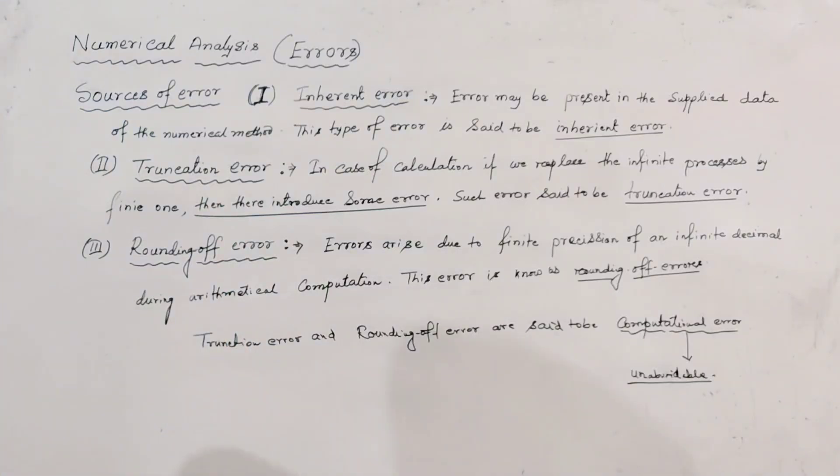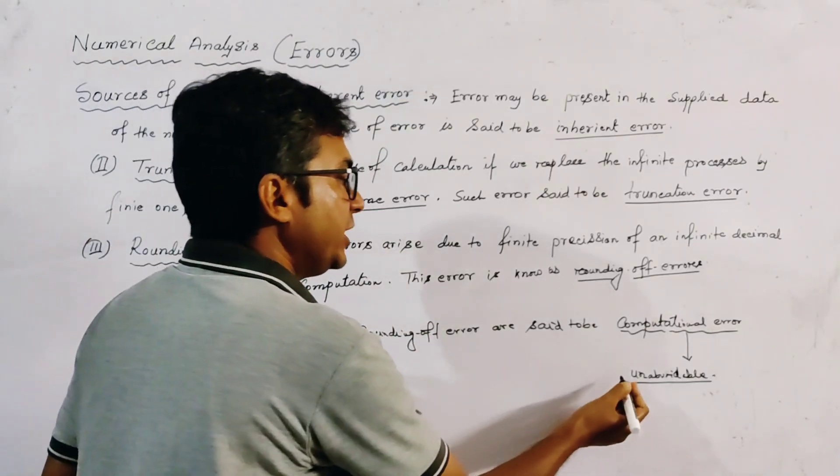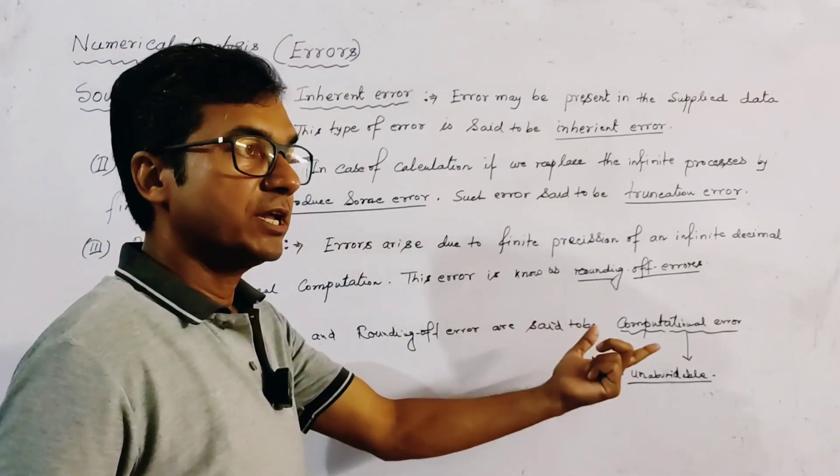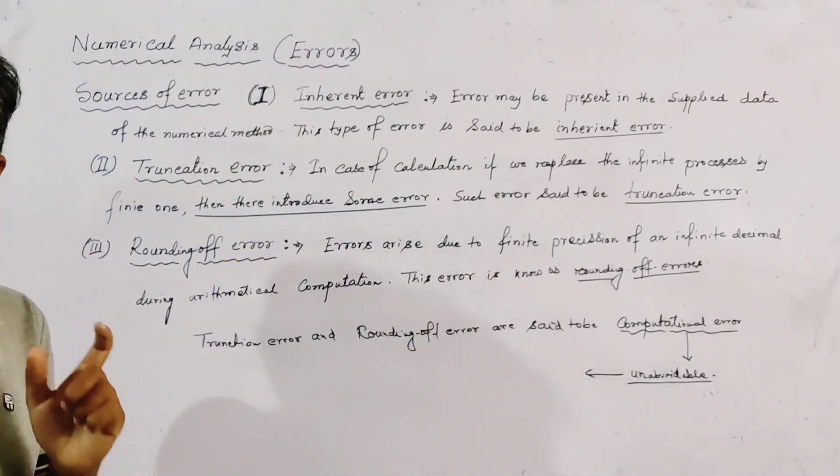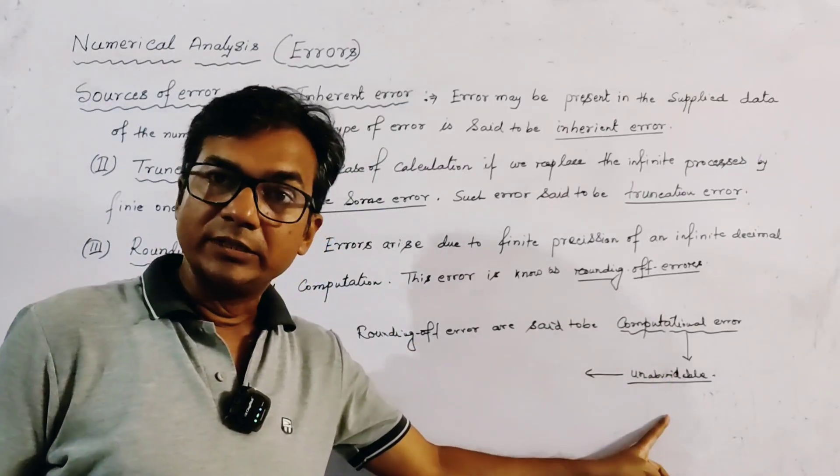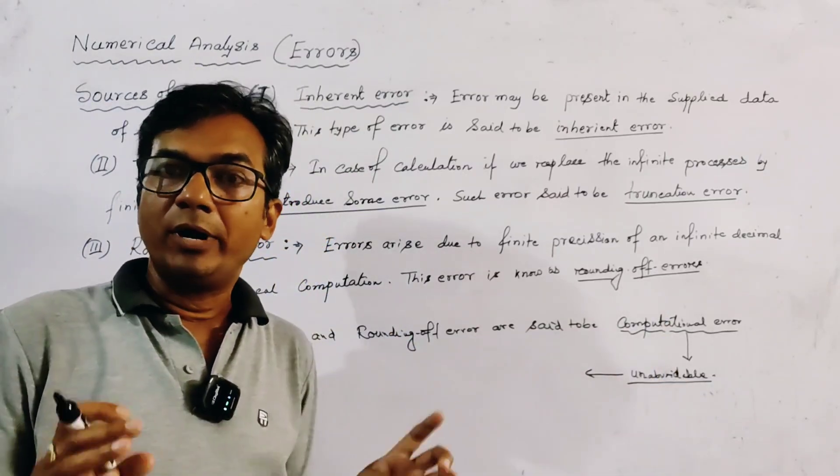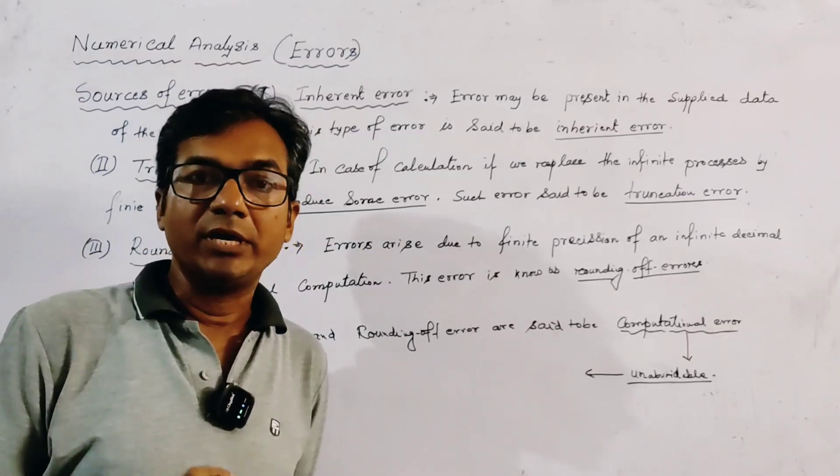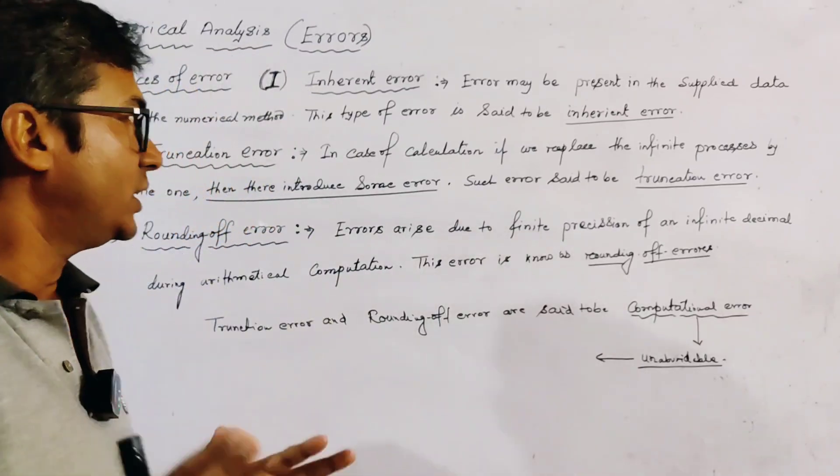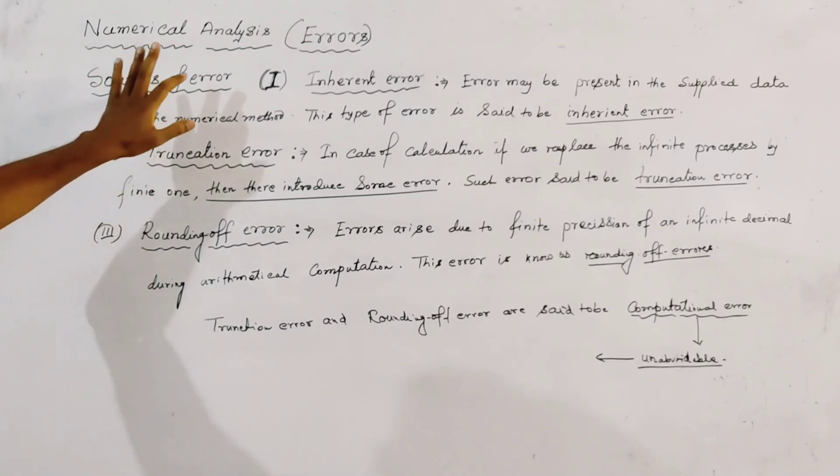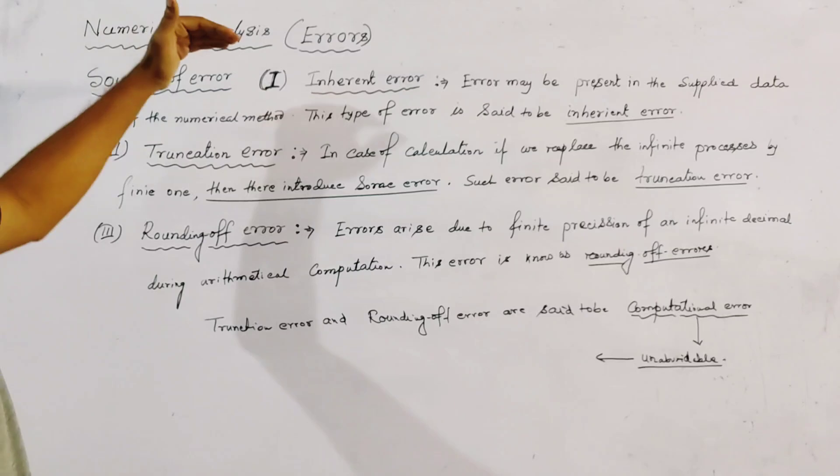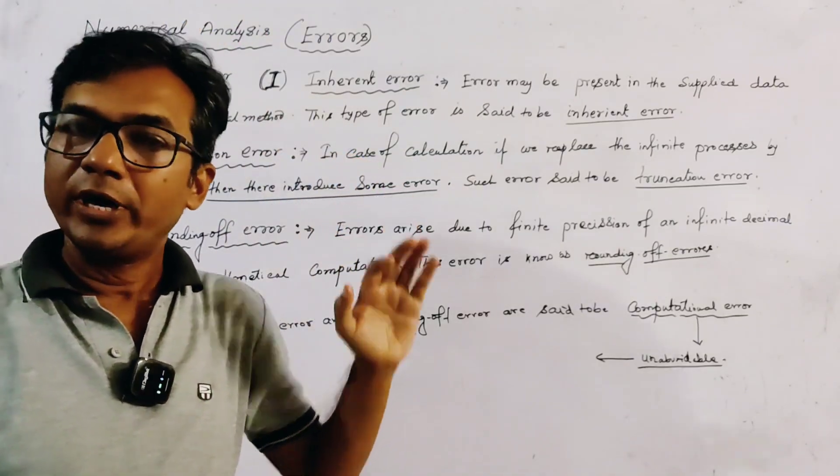Must be unavoidable, and we can minimize this error, that is the computational error, by applying suitable procedure. This error cannot be avoided, but this error can be minimized by using suitable process. And these three are the sources of error in numerical method, in our numerical analysis. Thank you.